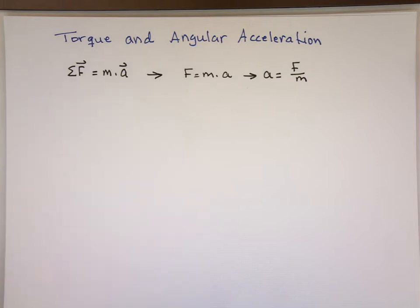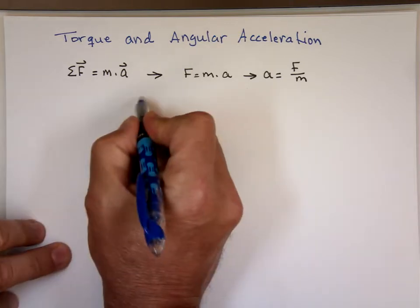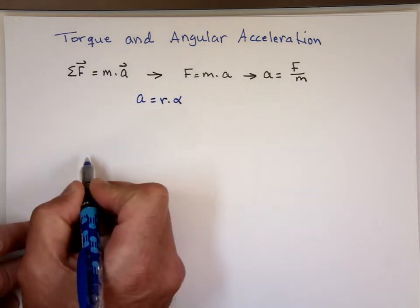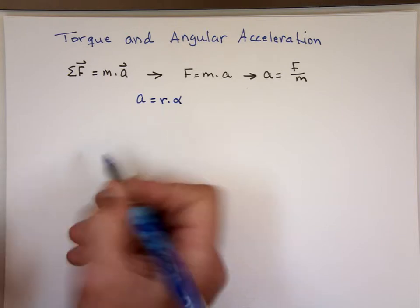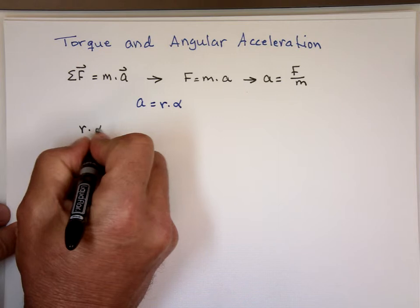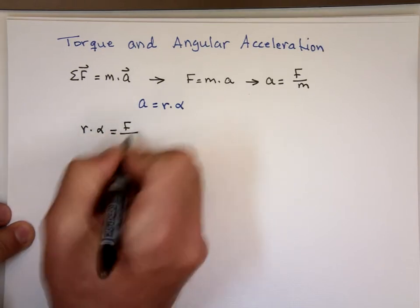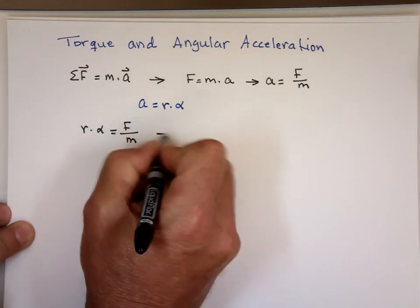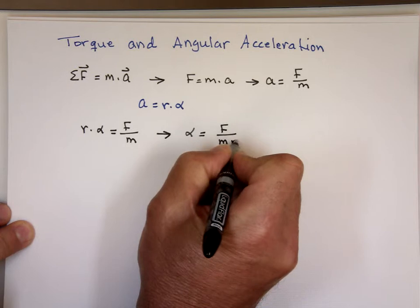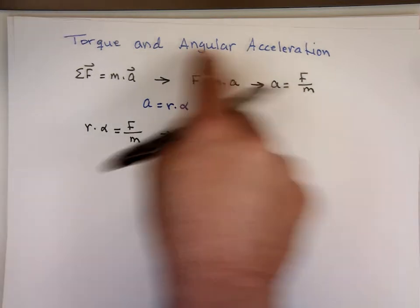Let's think more. However, I know there is a relationship between linear and angular acceleration, and that is A equals R times alpha. So if I replace A with R times alpha, at least I got the angular acceleration. I can say alpha equals F over M times R. Now I get the angular acceleration.